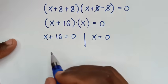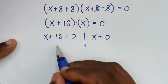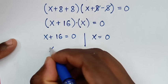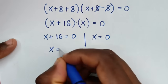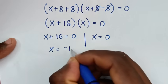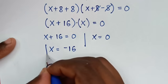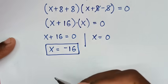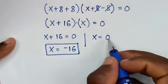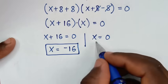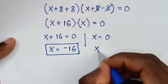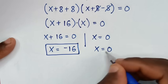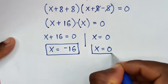From x + 16 = 0, taking 16 to the right side gives x = −16. That is the first value of x. And from the second factor, x = 0. That is the second solution.